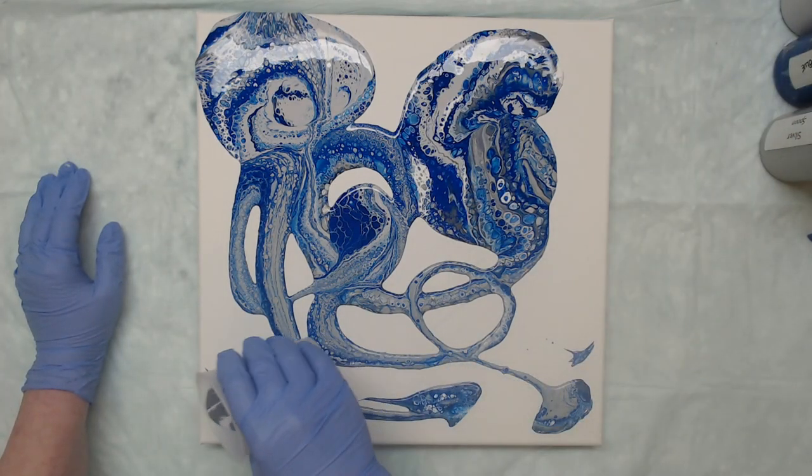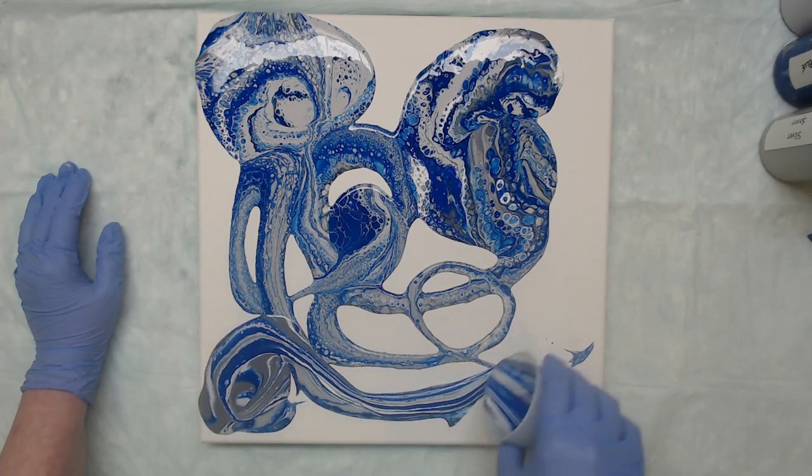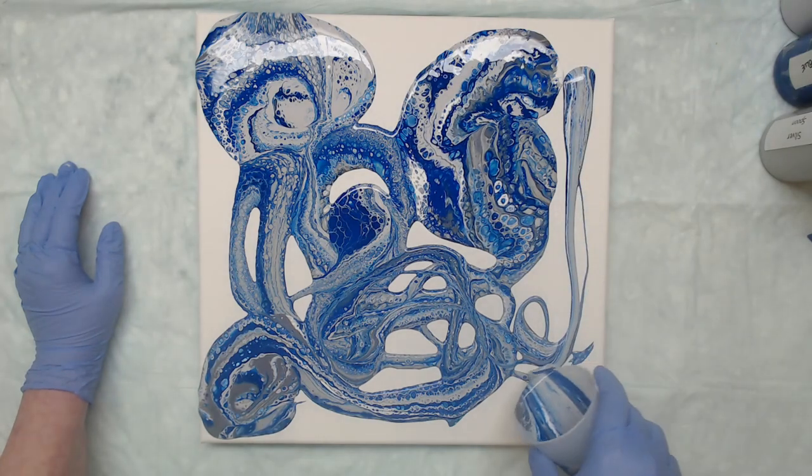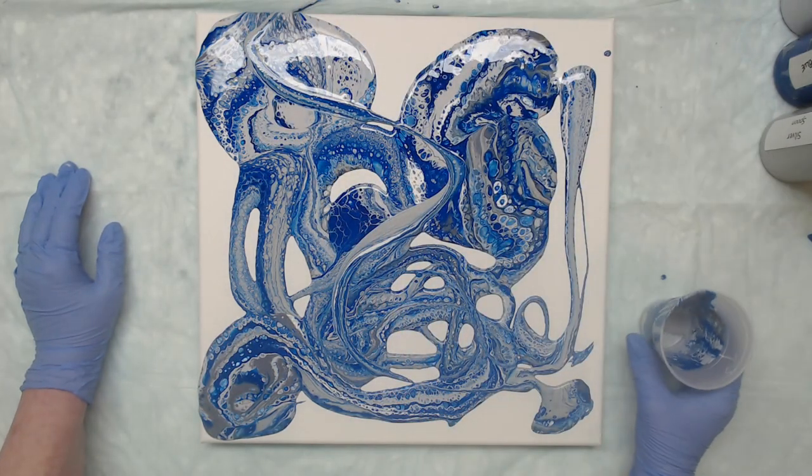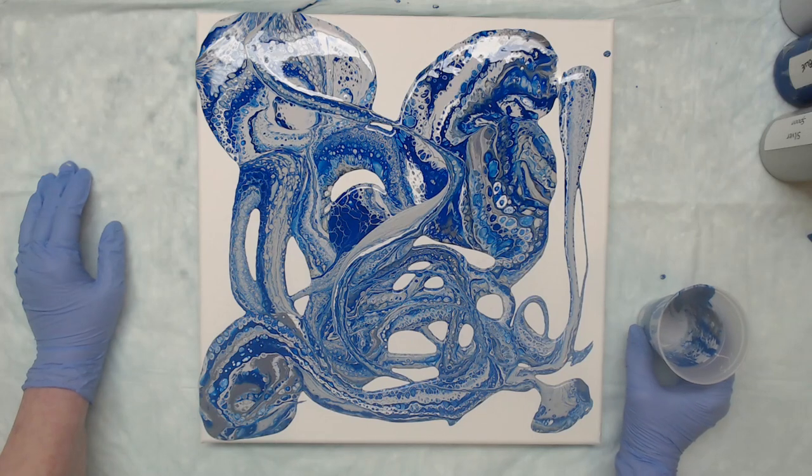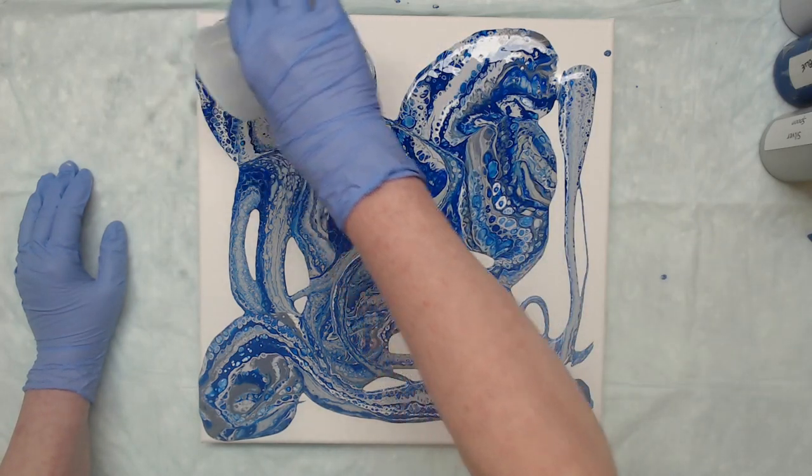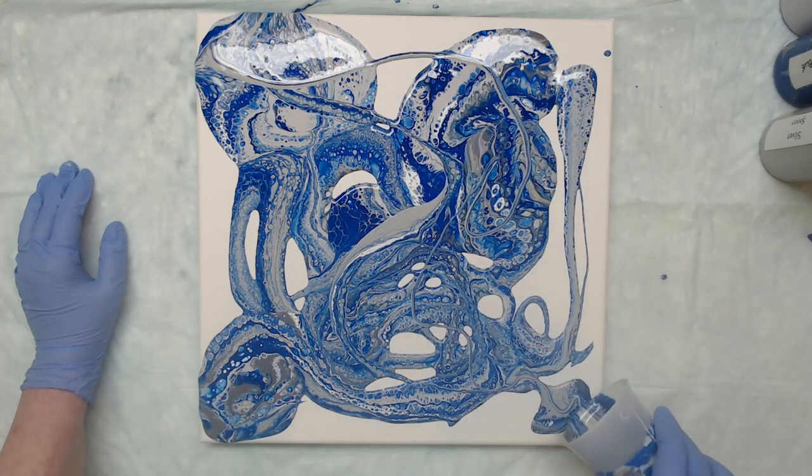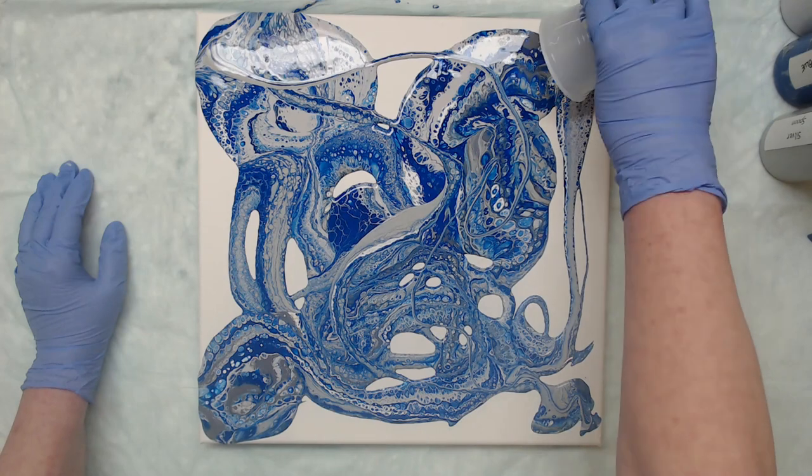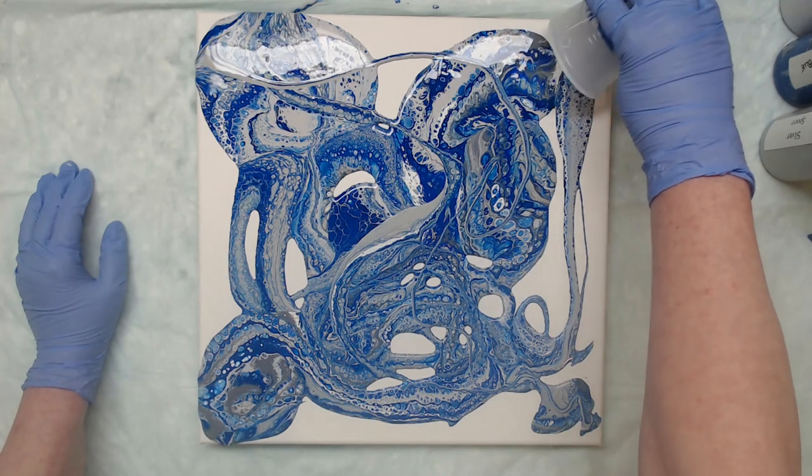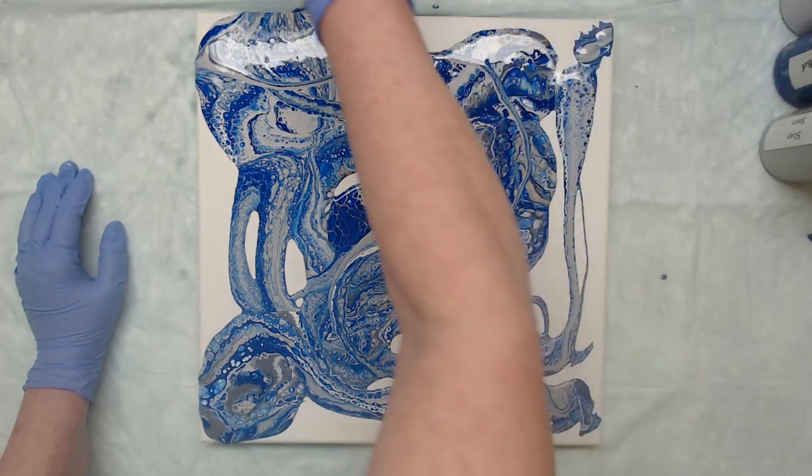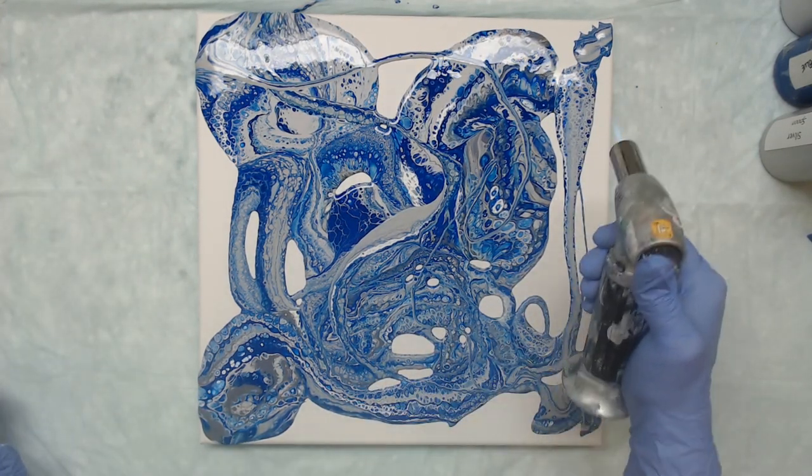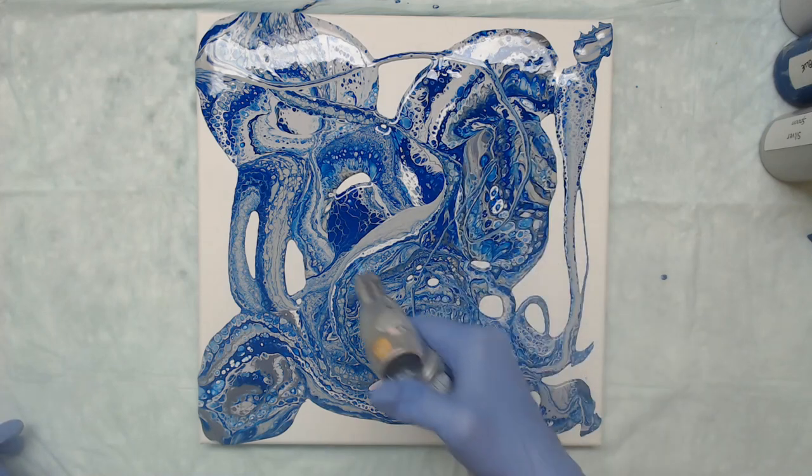That one has a lot of silver. Okay. Now I'm going to run the line through it once in a while. It does add to the depth of the painting instead of just pouring it out all at once. All right. We've got a ton of cells already.